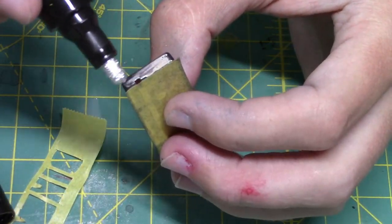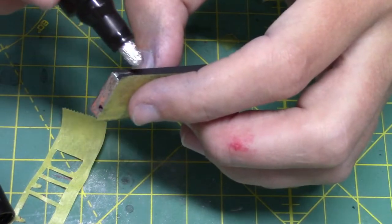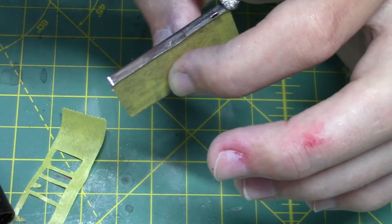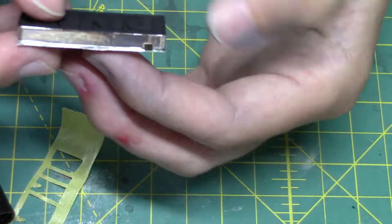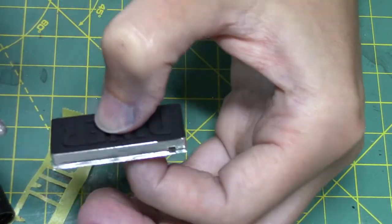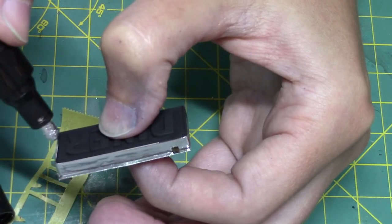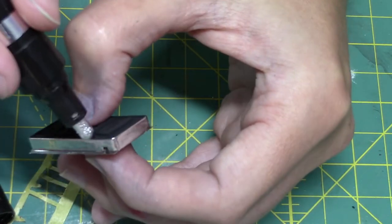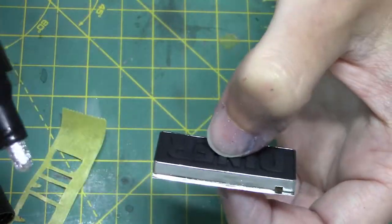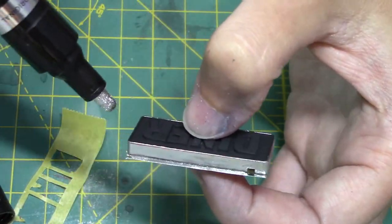Once dry, the sides were painted using a chrome paint pen. I then peeled off the tape, revealing the red letters.